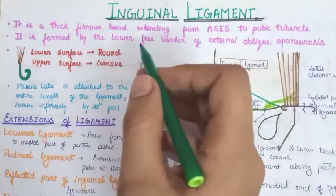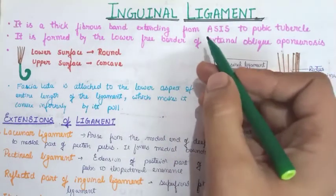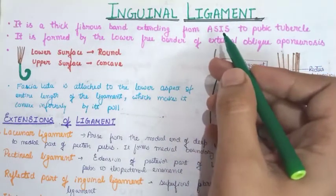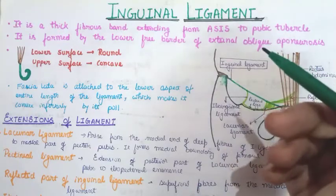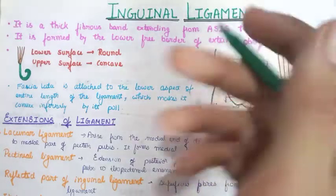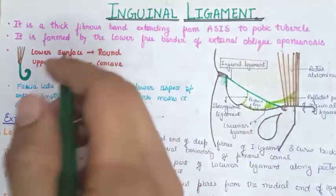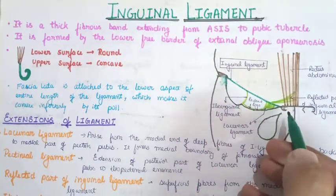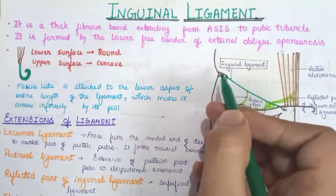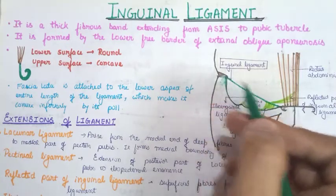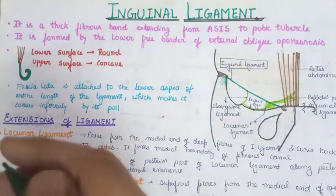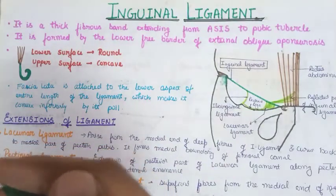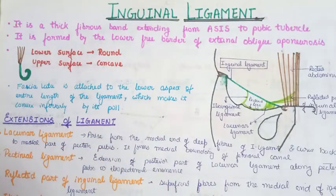The inguinal ligament is nothing but a thick fibrous band extending from the anterior superior iliac spine of the hip bone to the pubic tubercle. It is a band which extends between two bony prominences: the first is the ASIS and the second is the pubic tubercle.